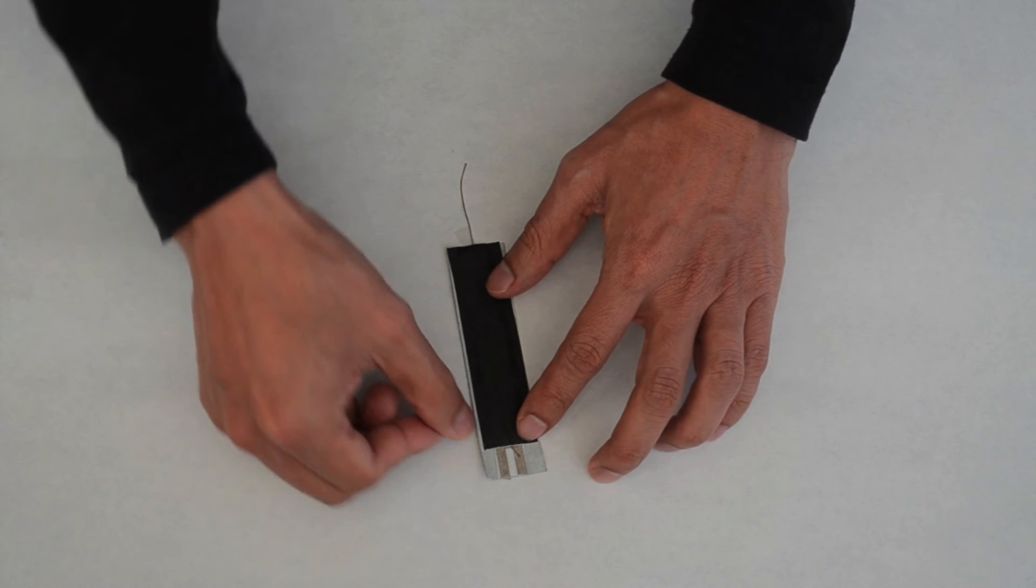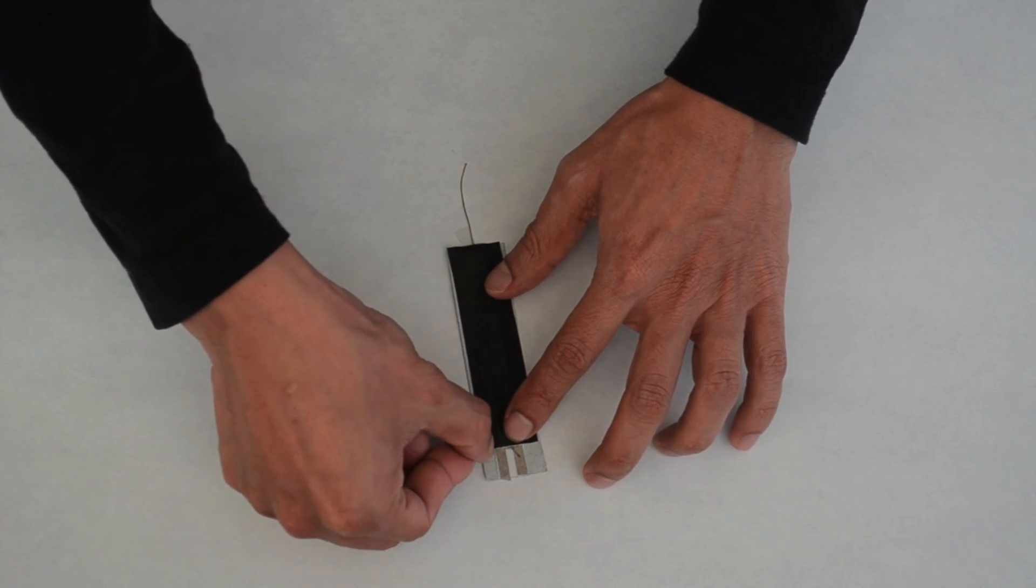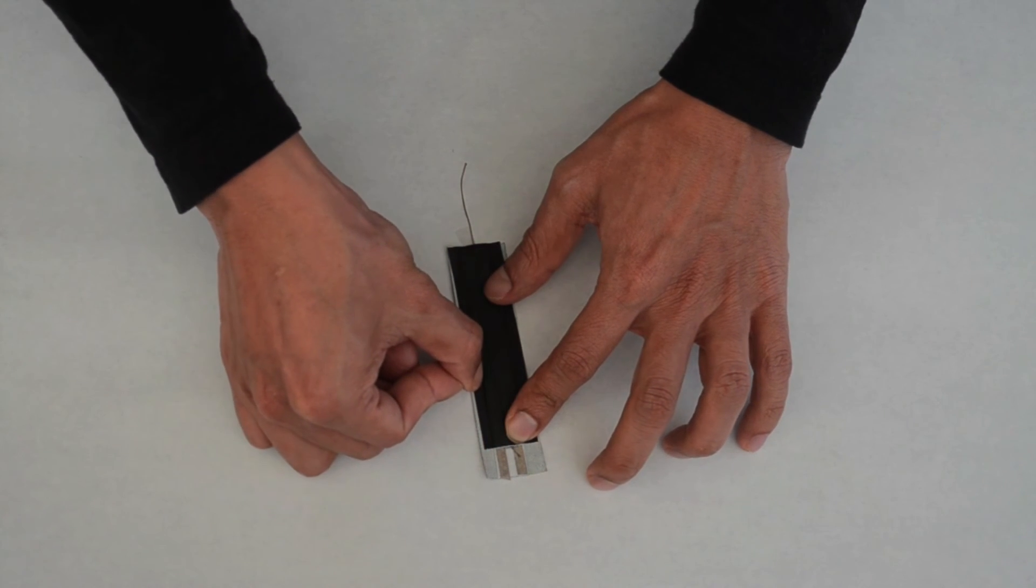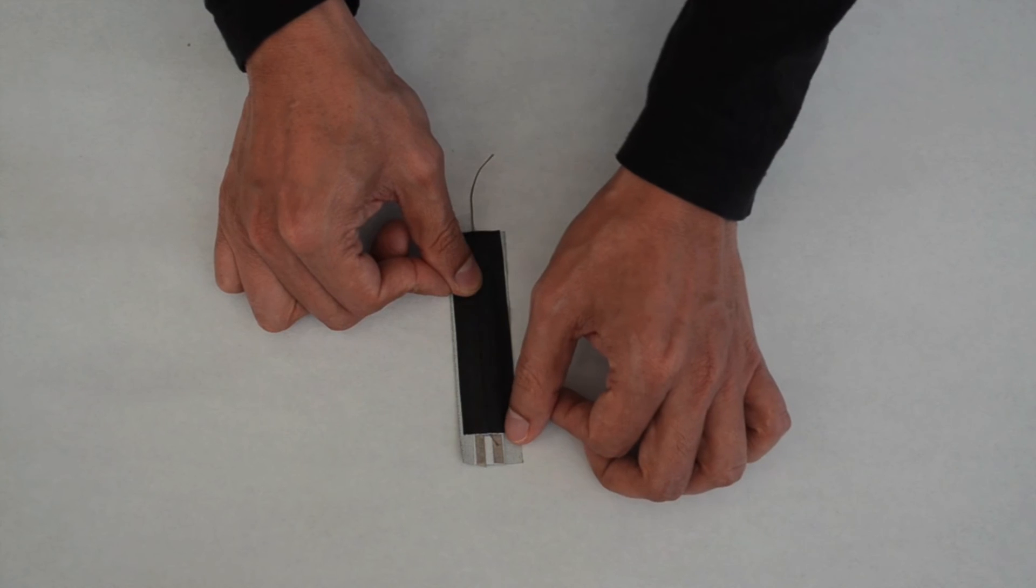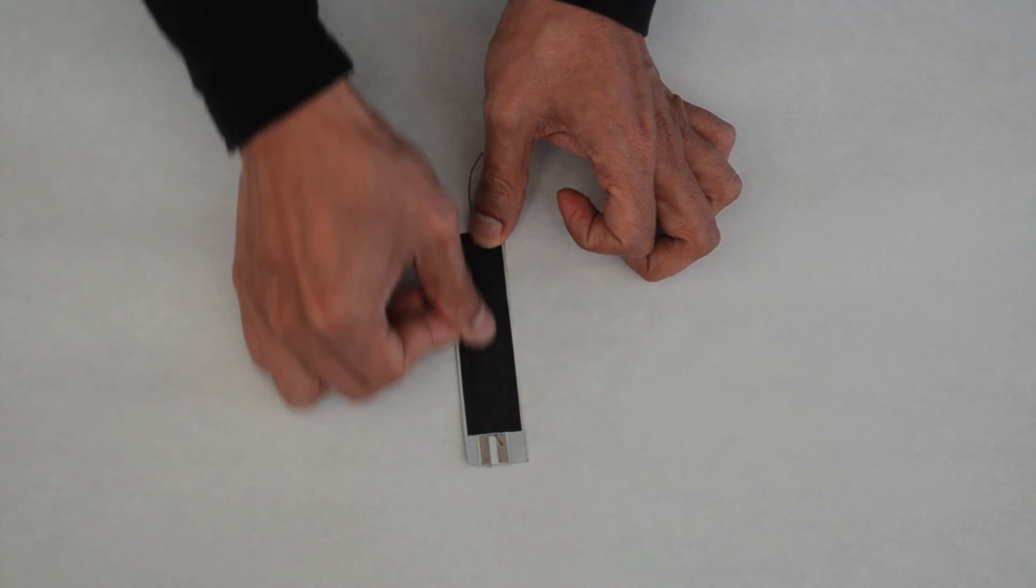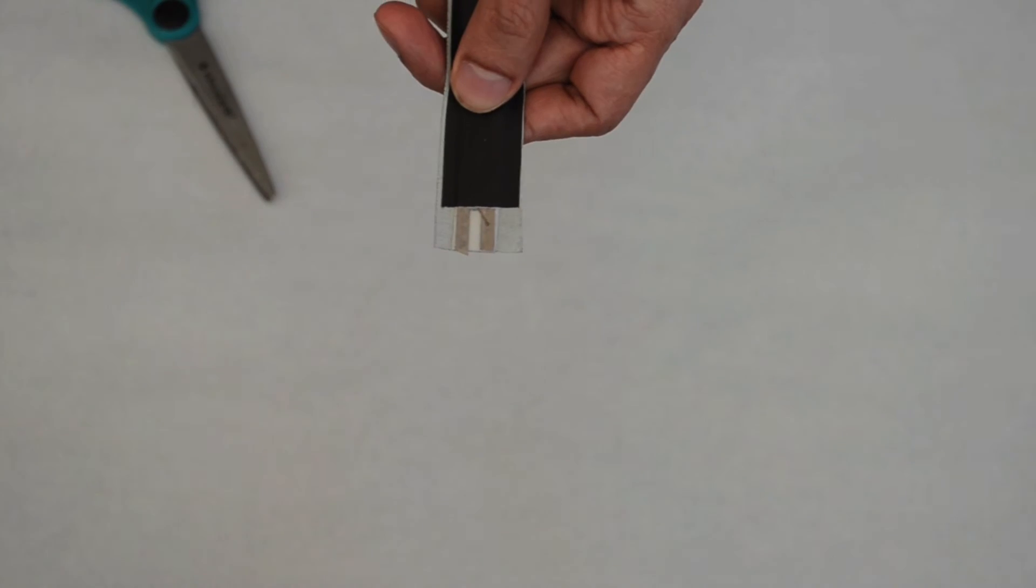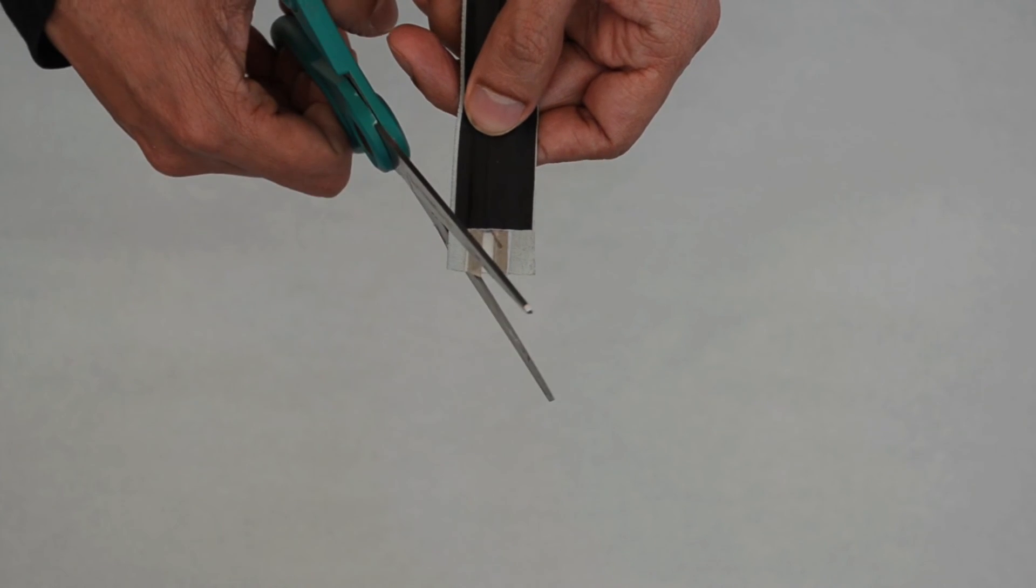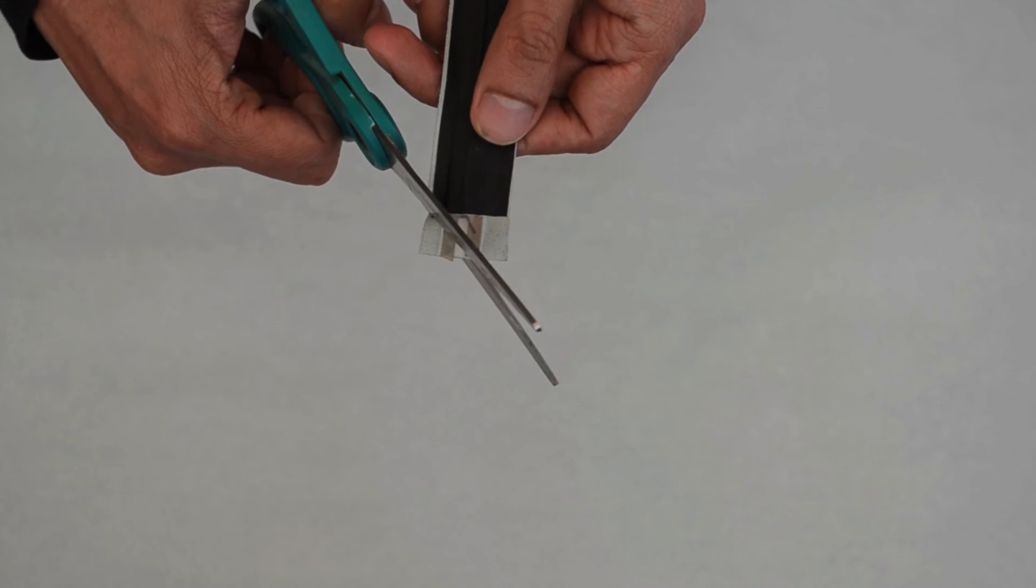Now use your fingernail or a coin to outline the base on the inside. Cut off any excess tape around the golden conductive textile and the sensor's edges.